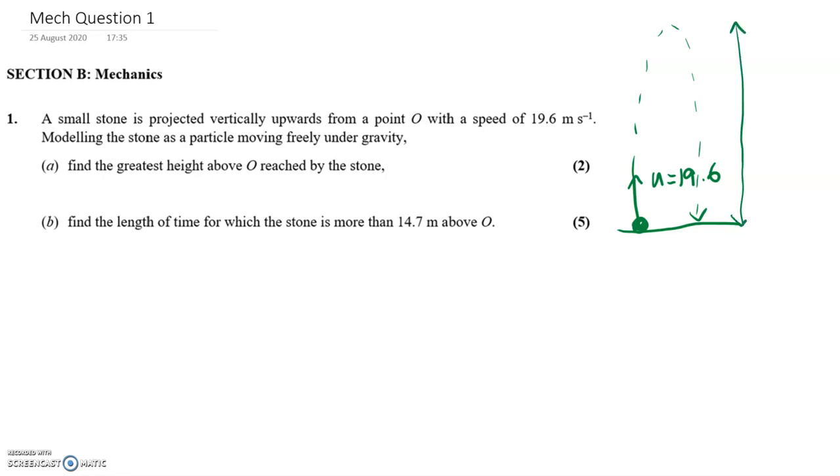And I'm going to label that small h. What you've got to remember is that it momentarily stops when it reaches its greatest height. And the other thing you've got to remember is that because you're throwing it upwards, you're going to take up as positive, the acceleration due to gravity is going to be minus 9.8.